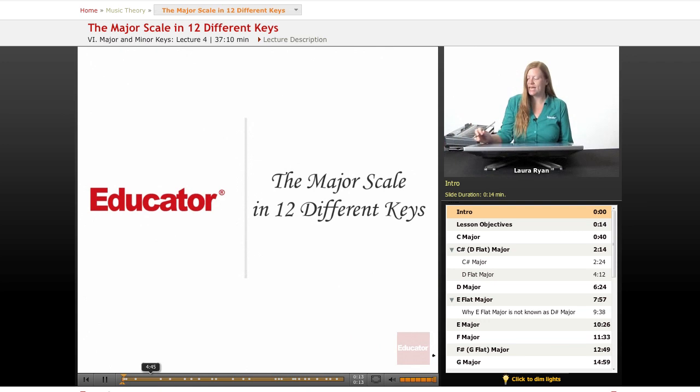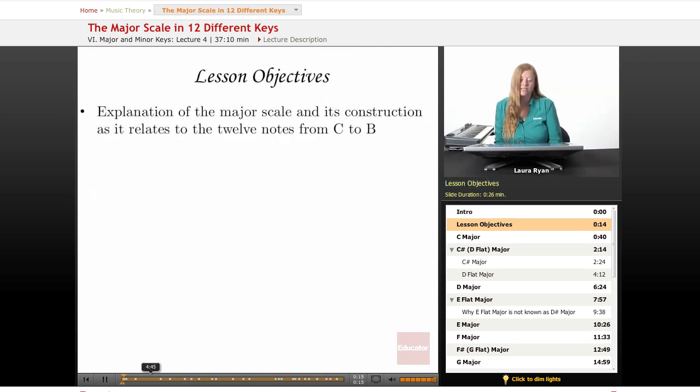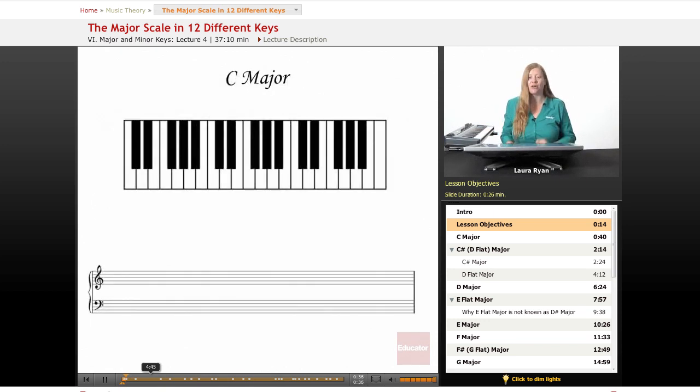Let's begin by talking about our lesson objectives. We'll be explaining the major scale and its construction as it relates to every note on the keyboard from C to B. You remember from our previous course about whole steps and half steps forming a pattern from which we can play a major scale on every key. This lesson we will be directly dealing with that, starting with C major.